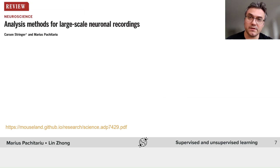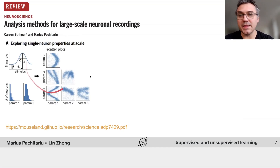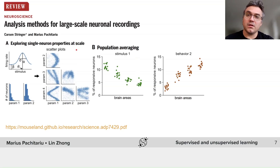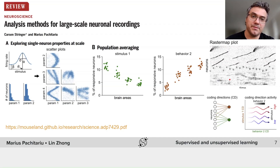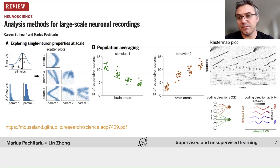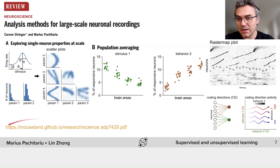If you want more ideas about how to analyze large-scale neural recordings, please look at the review article that we wrote. It has a number of ideas starting with single neuron properties computed at scale, going through population averaging to get a sense of fractions of selective neurons in different brain areas, visualization methods like raster map that allow you to instantaneously visualize large numbers of neurons and their activity, and other directions that project neural data onto different neural vectors related to behavior or stimuli. If you want access to this paper, you can go to our website, mouseland.github.io, and you will find it there.